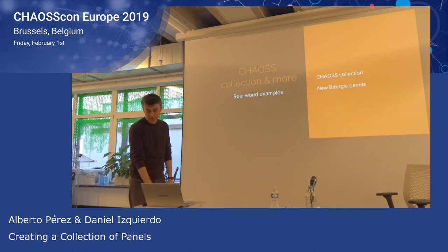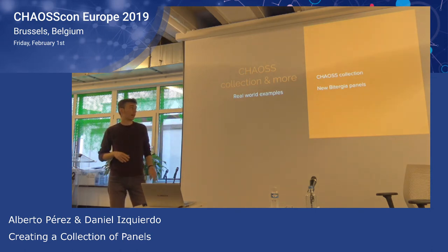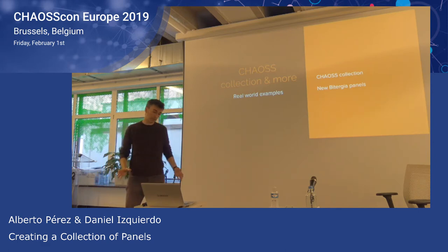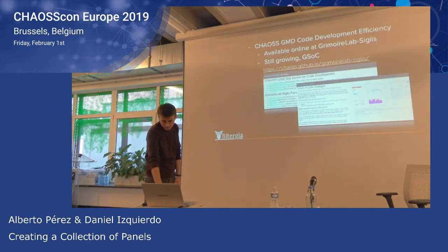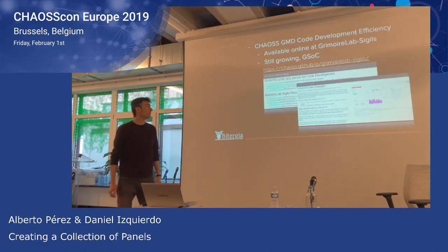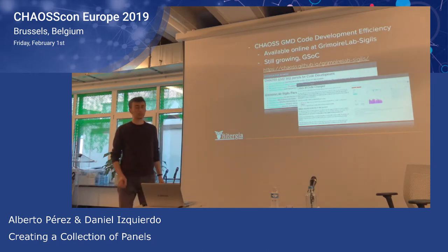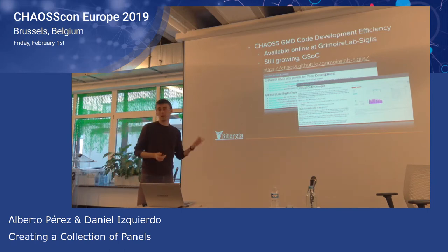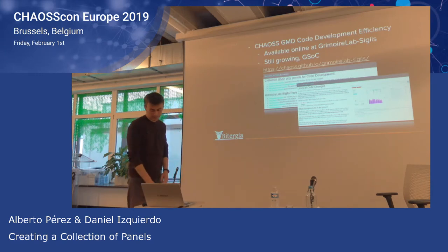We have right now one collection available online, which is the Chaos collection. Daniel and Anna saw the collection before. We are also preparing new Viterja panels — they are out of Seagulls right now because this is a work in progress. The Chaos GNB is available at that URL, so you can go there and look at the documentation about the new panels, go to the repository to get the panels, import the panels to your dashboard, or just go to chaos.viter.io and look at the panels.